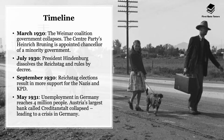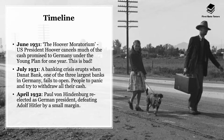In September 1930, Reichstag elections resulted in more support for the Nazis and the KPD — the Nazis being extreme right and the KPD extreme left. Many Germans started voting for extreme parties rather than moderate, liberal centre parties. By May 1931, unemployment in Germany reached 4 million people, and Austria's largest bank, Creditanstalt, collapsed, leading to a huge crisis in Germany.